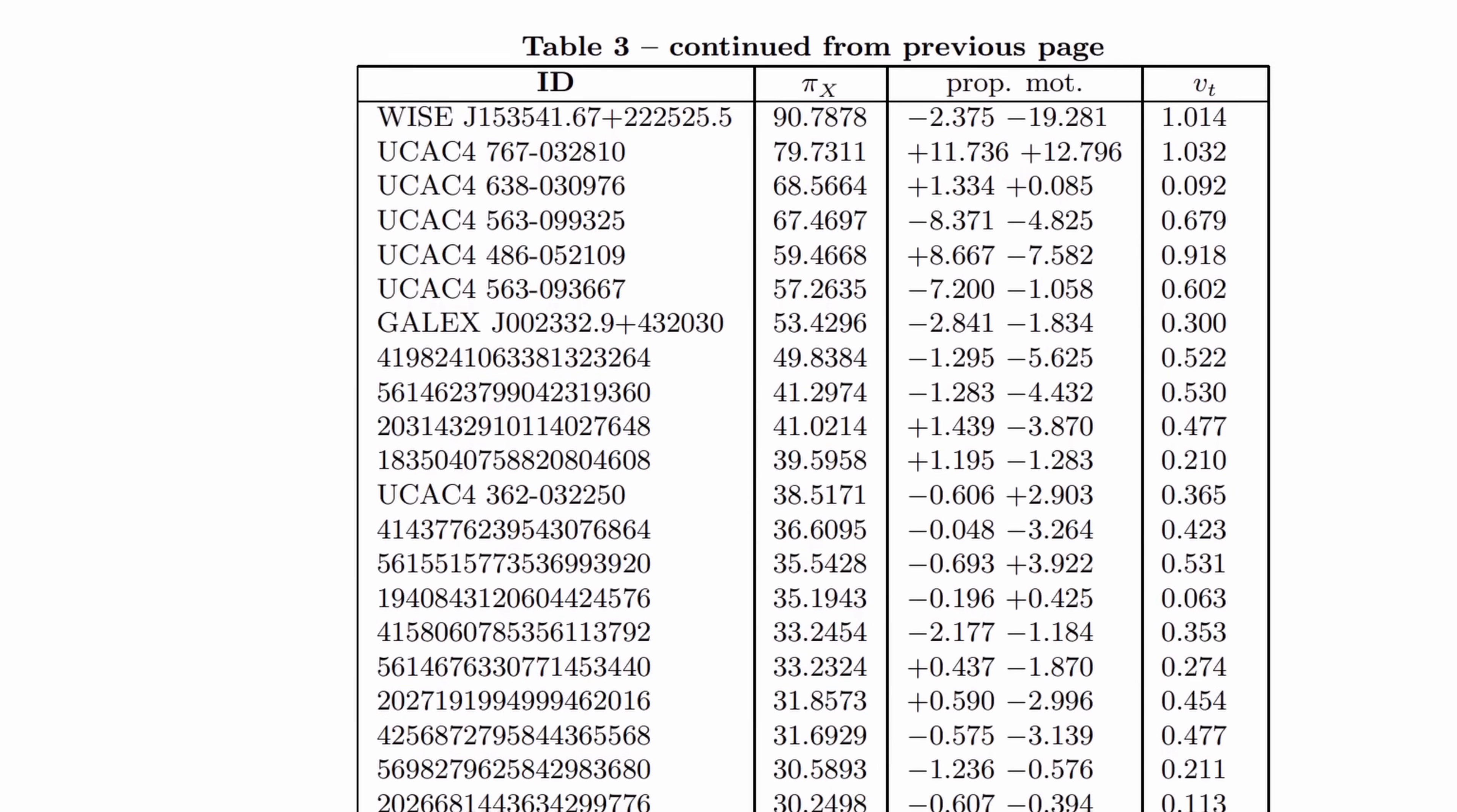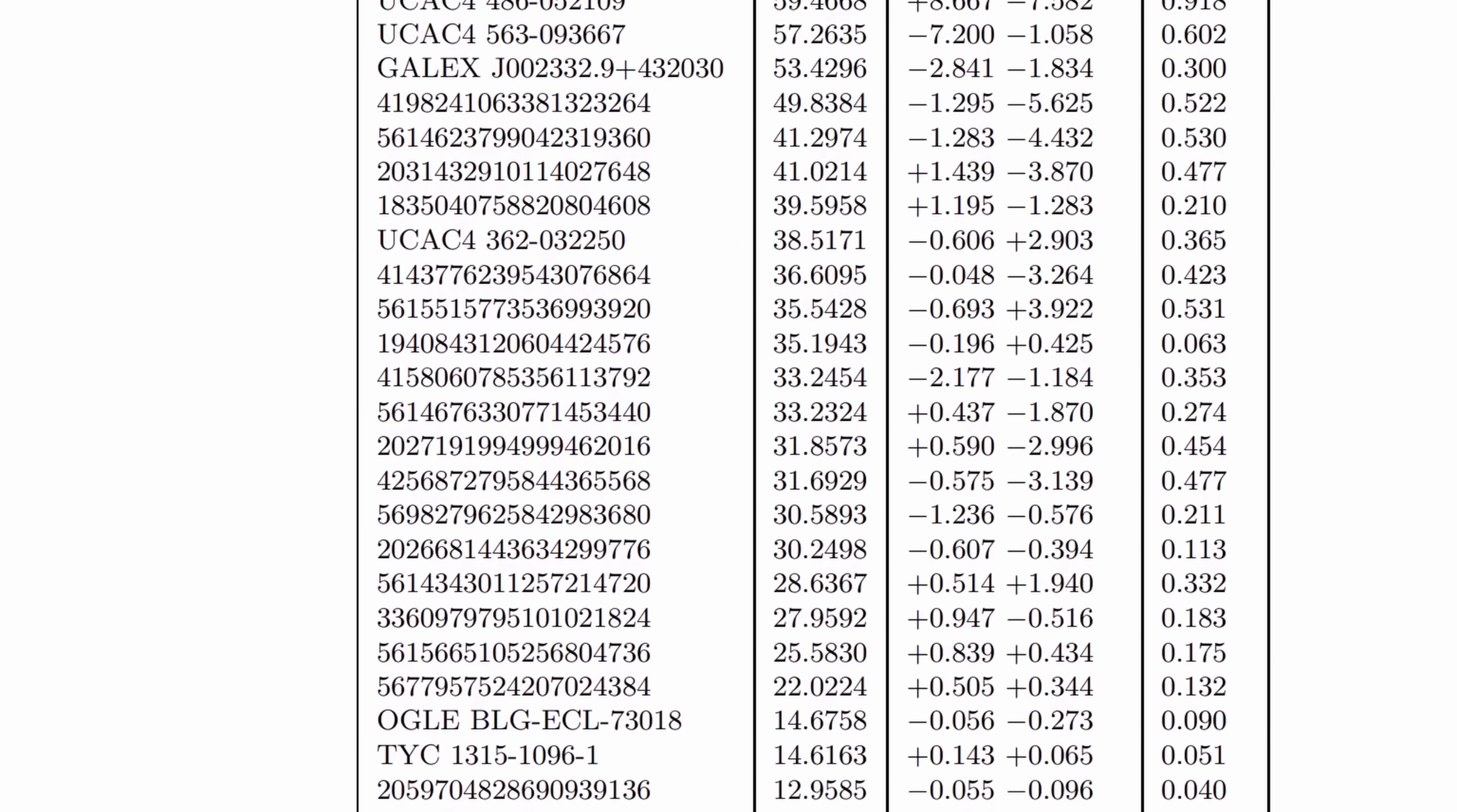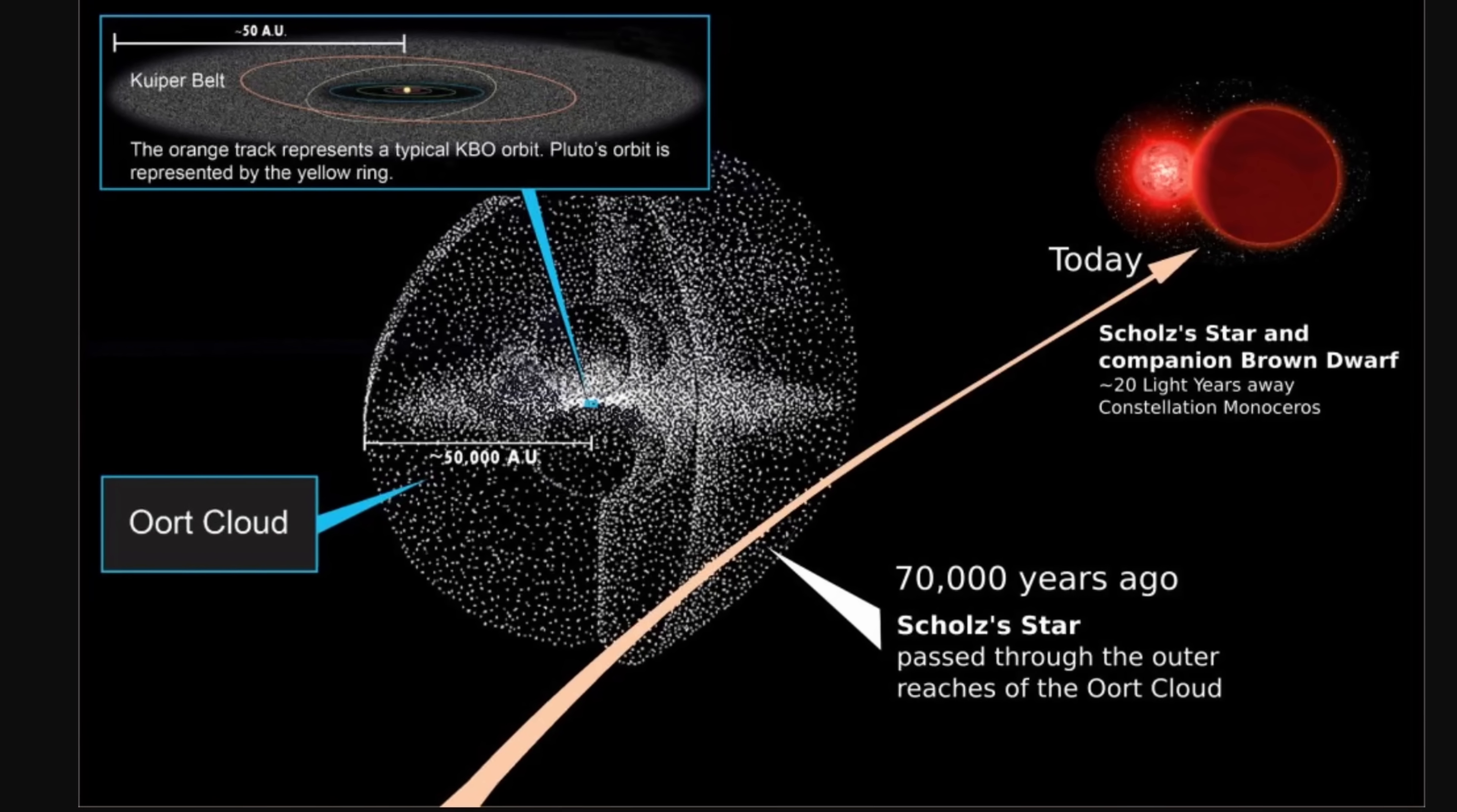In a different study that you can also find in the description, there's actually an entire list of different stars that passed near the sun in the last million years or so, and also stars that are going to be passing near the sun in the near future. But the most well studied and the most well known star is the famous Scholz's star.